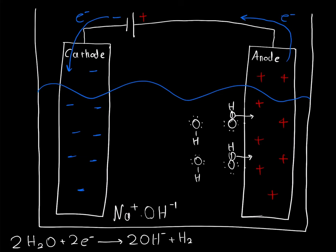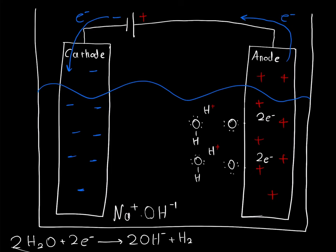Since each of those bonds is two electrons, we're going to lose a total of four electrons going into the anode. Now the hydrogen is just a proton without any electrons floating around. These positive hydrogen ions are then repulsed by the positive charge of the anode since they both have positive charges, so they're going to move to the left. They're going to find other hydroxides that were created by the cathode reaction. These other hydroxides have a negative 1 charge and the hydrogen has a positive 1 charge, so they attract.